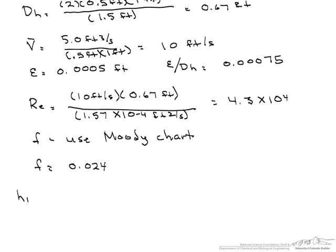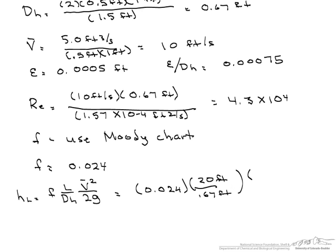Now we're ready to calculate the head loss. Again, it's the friction factor times the length of the pipe divided by the hydraulic diameter times the average velocity squared divided by 2 times gravity. So that's 0.024 times 20 feet over 0.67 feet times 10 feet per second squared divided by 2 times 32.2 feet per second squared. And when we do the calculations, we find out that the head loss for this 20-foot length of our non-circular duct is 1.1 foot.